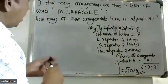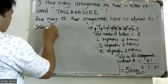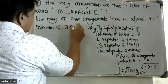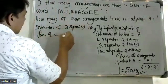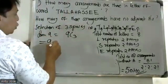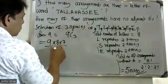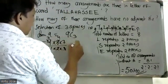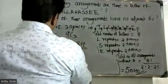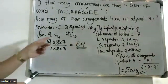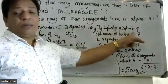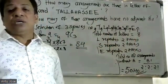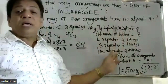We need the selection of 3 spaces from 9 available spaces — that is 9C3. The calculation is: 9 times 8 times 7 divided by 1 times 2 times 3, which equals 84.